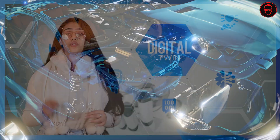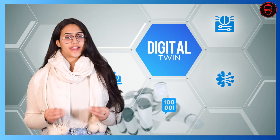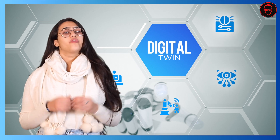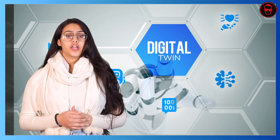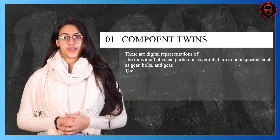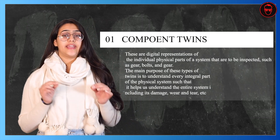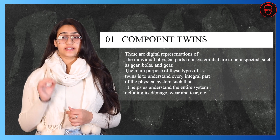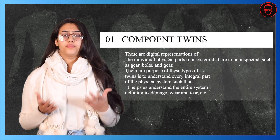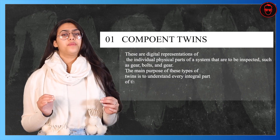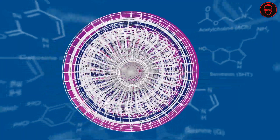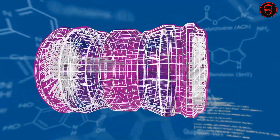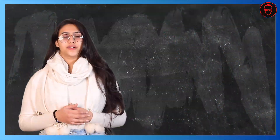Digital twins can be divided into four categories. They are segregated on the basis of purpose and scope, whereas they all do the same thing — that is virtual modeling of a real-world object. Firstly, we have component twins. These are digital representations of the individual physical parts of a system that are to be inspected, such as gears, bolts, etc. The main purpose of these twins is to understand every integral part of the physical system, helping us understand the entire system including its damage, wear and tear, etc.